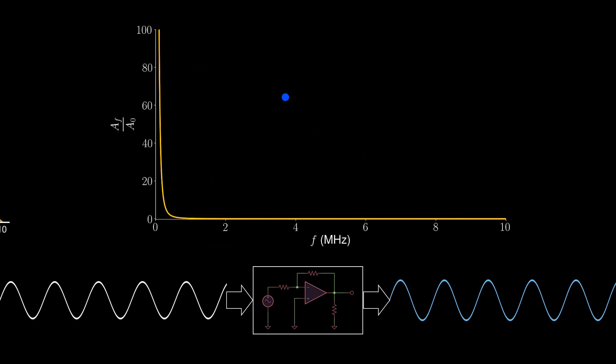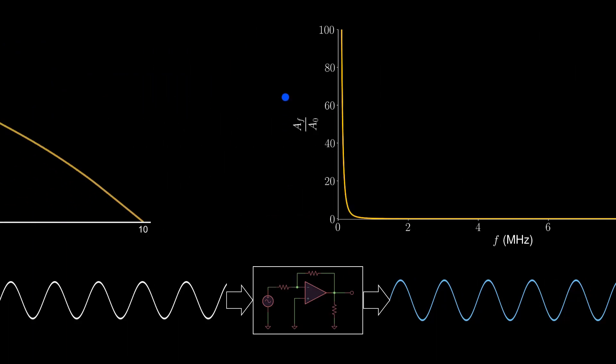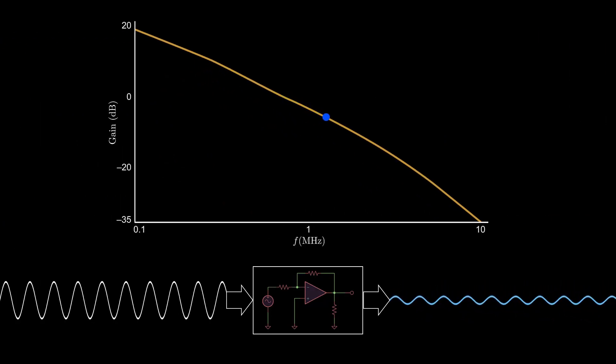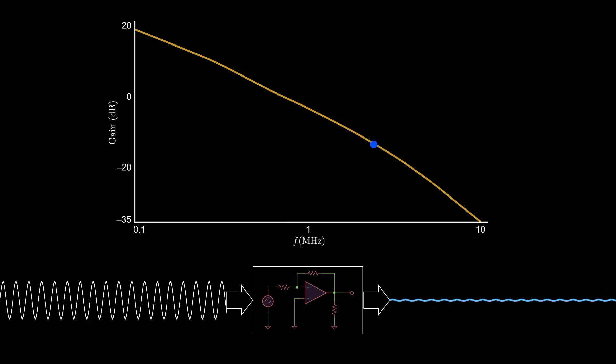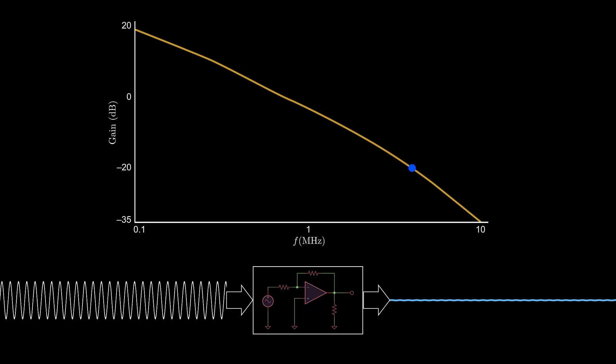Look how difficult it is to read the high frequency behavior from the same data plotted on linear axes. At high frequencies, this op amp feedback circuit doesn't even produce a gain. Signals lose amplitude, diminishing by 20 dB at 4 MHz. That's a 100-fold amplitude loss.